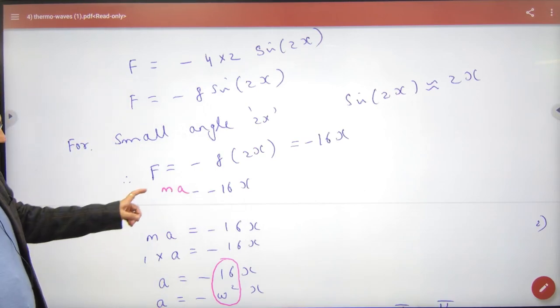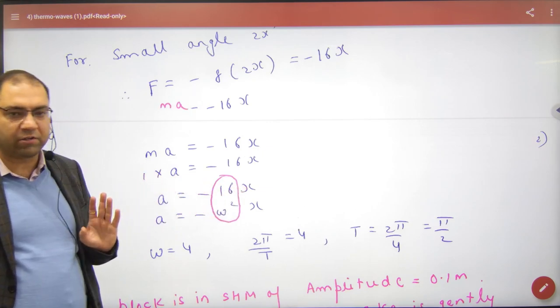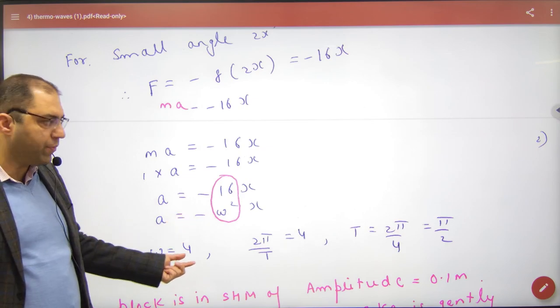What will mass into acceleration be? Mass is given in the question. Acceleration is proportional to displacement with a negative sign - that's SHM. Compare it to get omega, then the time period.